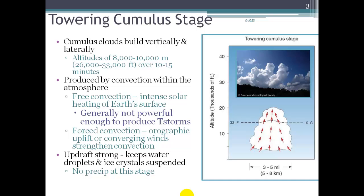This towering cumulus stage is denoted by strong updrafts. Any water droplets and ice crystals that have formed in the cloud are kept suspended by these strong updrafts, so there is no precipitation at this stage in the cloud's development.